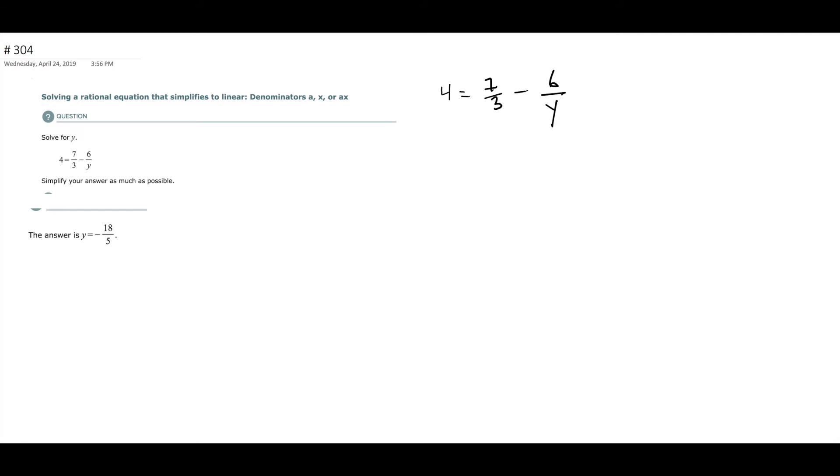So what you can do is, first of all, these two right here don't have a letter on them, so you can put them together. Okay, so you're going to go minus 7 thirds, minus 7 thirds.